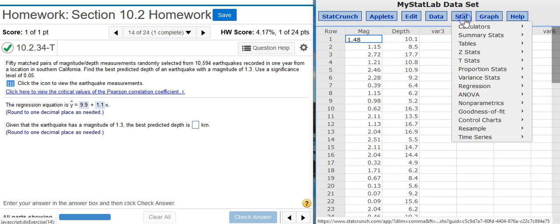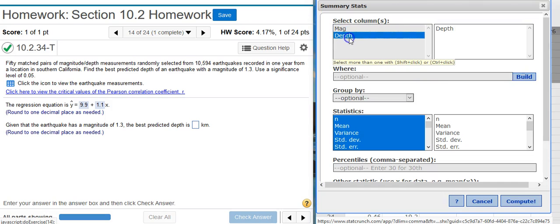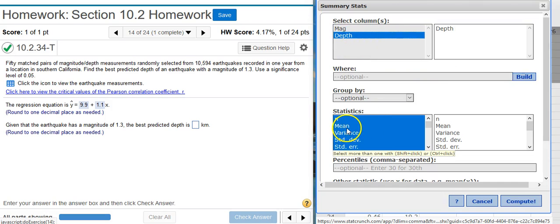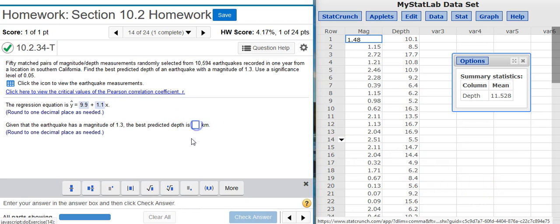So to do that, I'm going to go up to Stat, Summary Stats, Columns. Select the column with my Y values. Select the mean as the statistic to be calculated. Hit Compute. And there's my best predicted value. I'm asked to round to one decimal place.